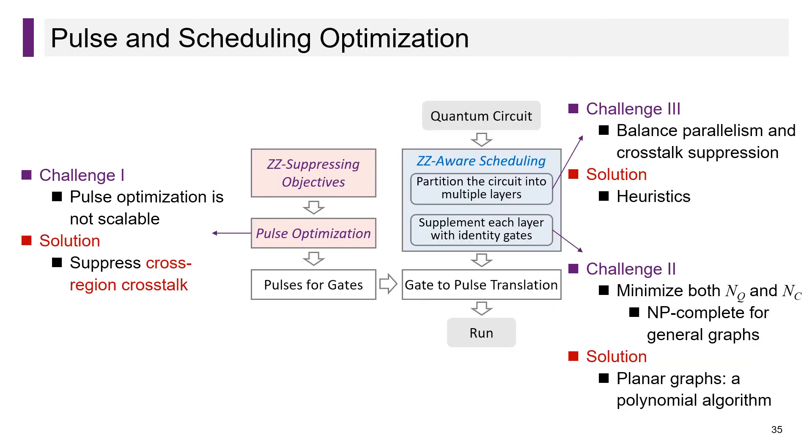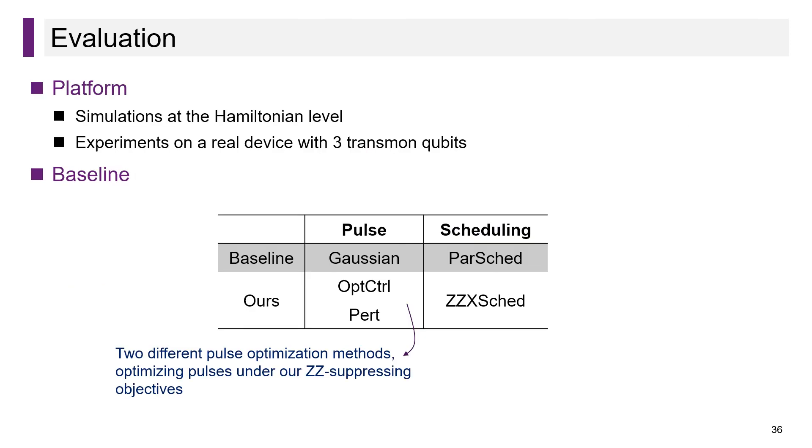To summarize, we propose co-optimizing pulses and scheduling to suppress ZZ crosstalk, and we have addressed three challenges to put it into practice. We have evaluated our approach by simulations at the Hamiltonian level and experiments on a real device. We used Gaussian pulses and parallel scheduling as the baseline. For pulse optimization, our approach specifies only the optimization objectives and does not limit the method used, so we have used two different pulse optimization methods, optimal control and PARCC, to demonstrate this.